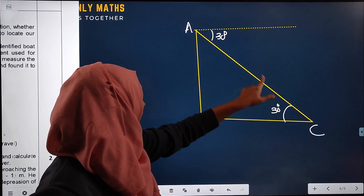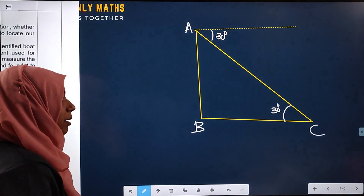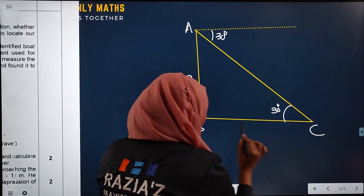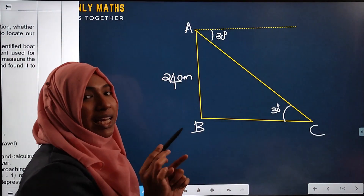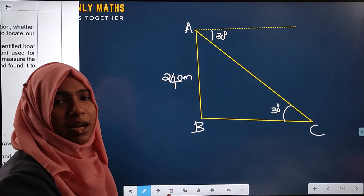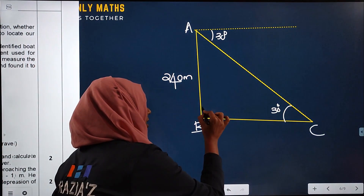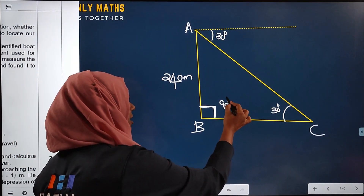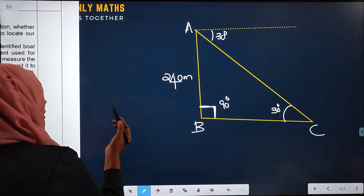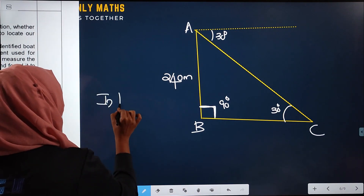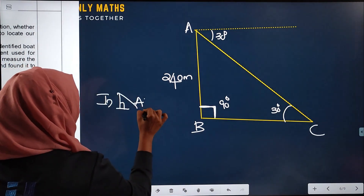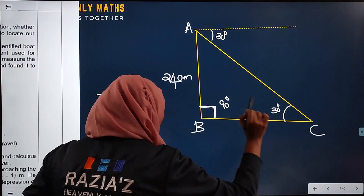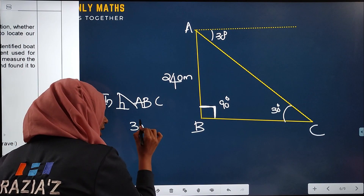This angle is also 30 degrees and this angle is also 30 degrees because they form an alternate pair of interior angles. So this is 30 degrees, this is 30 degrees. If I am going to find the distance BC — the tower is on the horizontal ground — the angle is 90 degrees. Triangle ABC is a right angle triangle, and in triangle ABC, the angle is 90 degrees and the angle at C is 30 degrees.